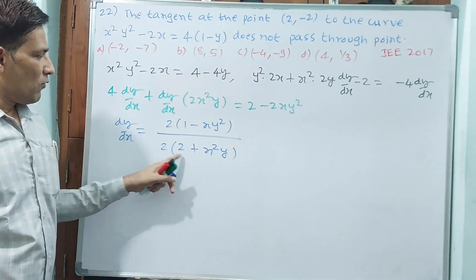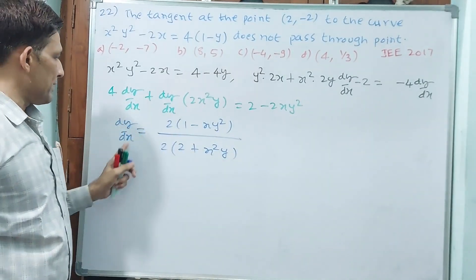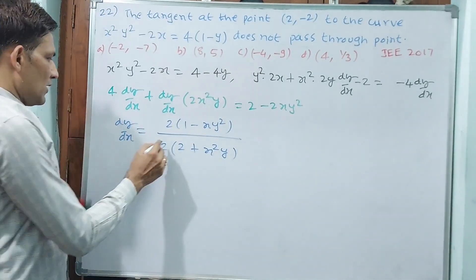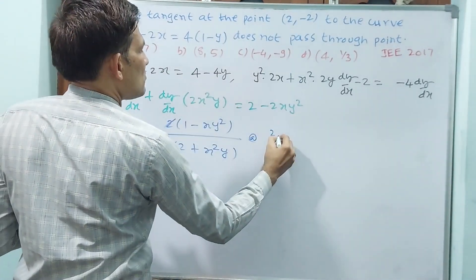Is it correct? 4 plus 2x²y. I have taken dy/dx common. Now, 2 cancel out. See, 2 common minus 2.